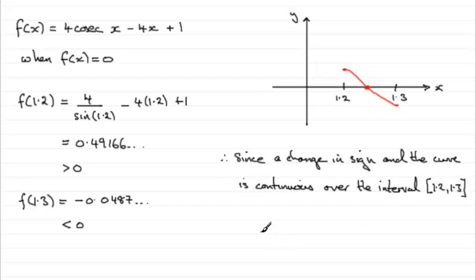Then there is a root. And that root is called alpha, in this case, in that interval. All right. So that root alpha then is going to be there, somewhere between 1.2 and 1.3. And we did it then by the change of sign method.